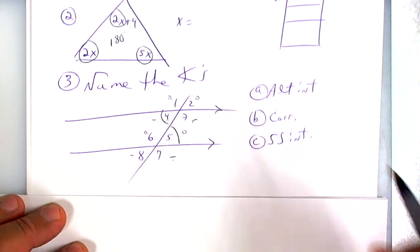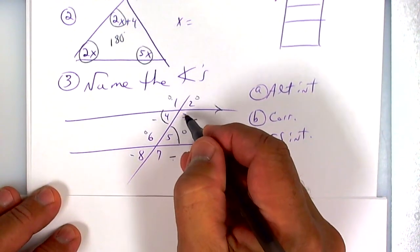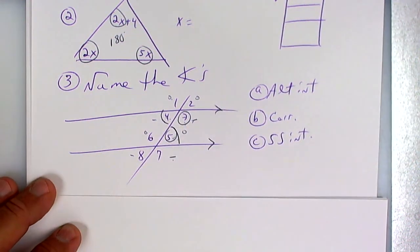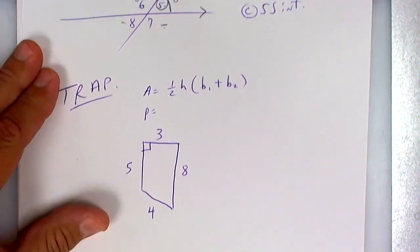Top-top and then bottom-bottom: 3 and 7, and 4 and 8. Same side interior would be the same side, 3 and 5, or 4 and 6. Those are called same side interior.